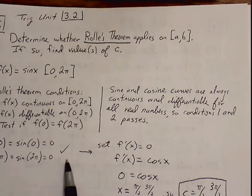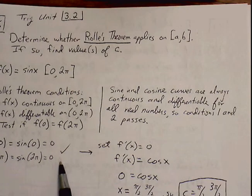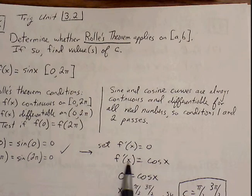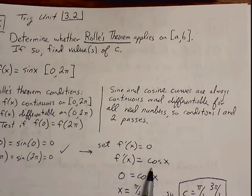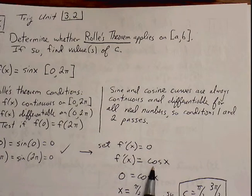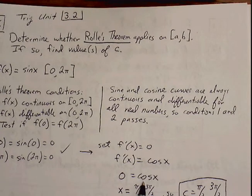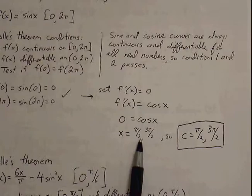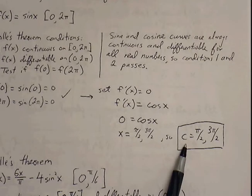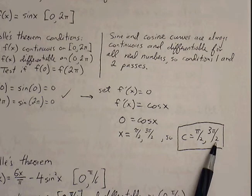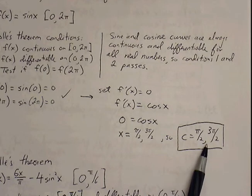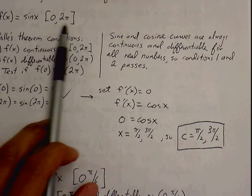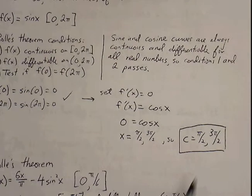Now we can guarantee there's going to be an x value where the slope is 0. We take the derivative and set it equal to 0. f prime equals cosine of x, so we set cosine of x equal to 0. Cosine of x equals 0 at pi over 2 and at 3 pi over 2. Our c values are therefore pi over 2 and 3 pi over 2. We confirm these values lie between our interval 0 and 2 pi, so we have our answer.